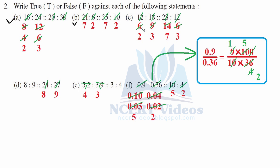Part c: 12 is to 18 gives 6 to 12 and 9 to 18. You can see they are not in proportion because 2 is to 3 and 7 is to 3 are not equal: False. Part d: 8 is to 9 — it is not further reducible. 8 threes are 24 and 9 threes are 27, therefore they are in proportion: True.